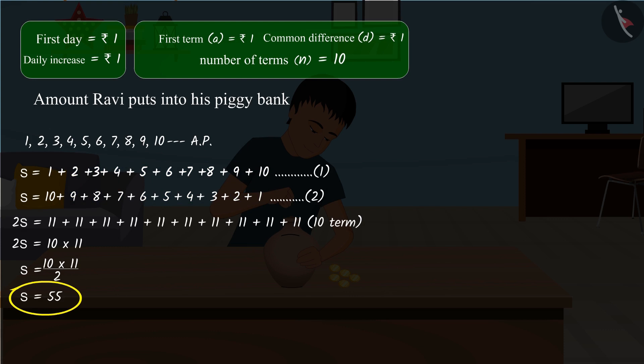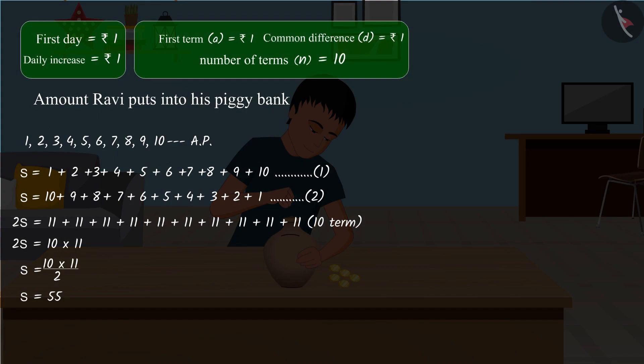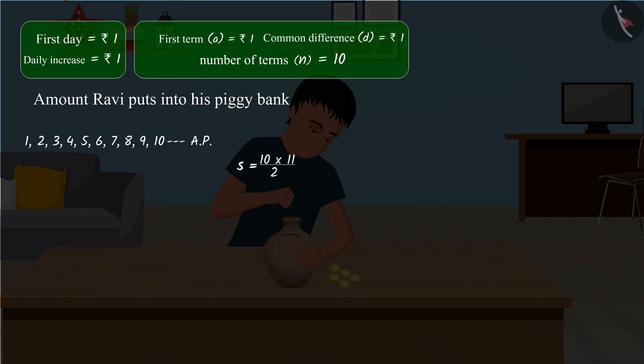Hence, Ravi has collected a total of 55 rupees in his piggy bank so far. Now, we will discuss the process of adding equations 1 and 2, step by step. If we write the steps as follows, what can you say by looking at it?